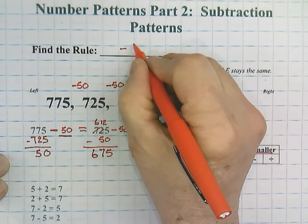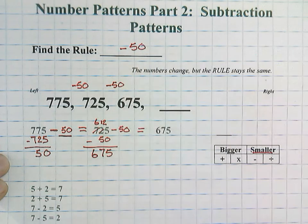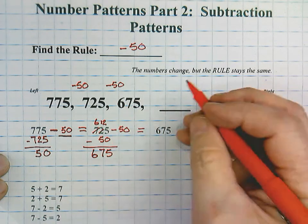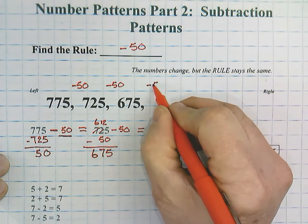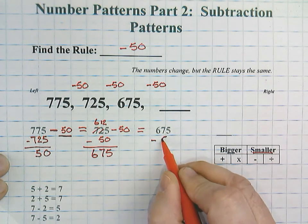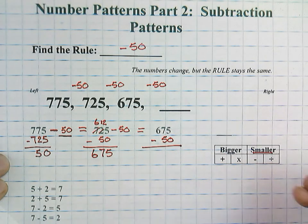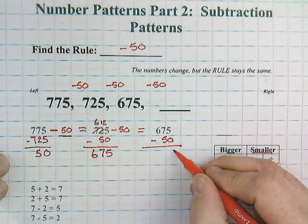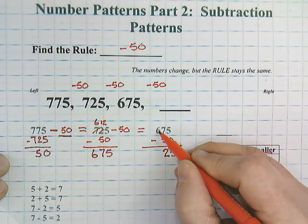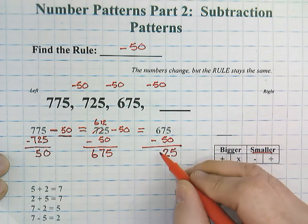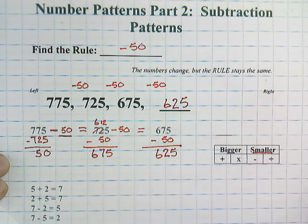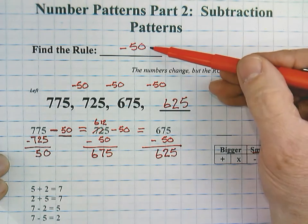So, we know for certain that our rule is going to be a minus 50 rule. Now, our job is to figure out the blank. Well, that's easy. We're just going to continue our rule of minus 50. So, 675 minus 50, 5 minus 0 is 5, 7 minus 5 would be 2, and 6 in the hundreds take away nothing would be 6. So, our last missing number would be 625 using a rule of minus 50.